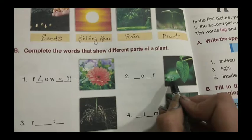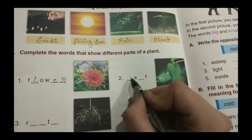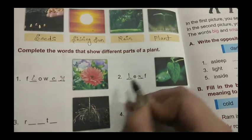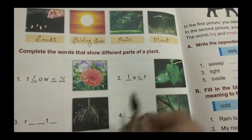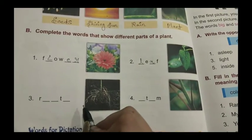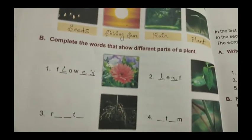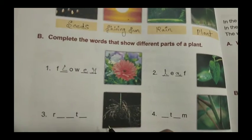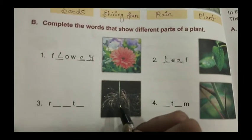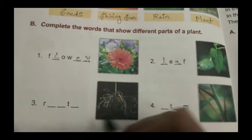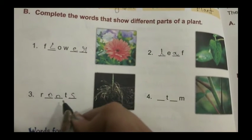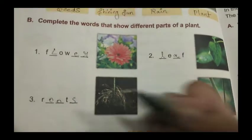In the second picture we see a leaf. So we will write here L, E, A, F — leaf. In the third picture it is roots. So we will write here R, O, O, T, S — roots.